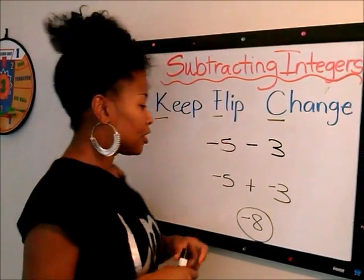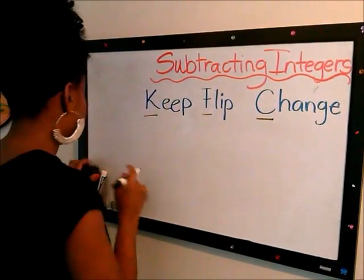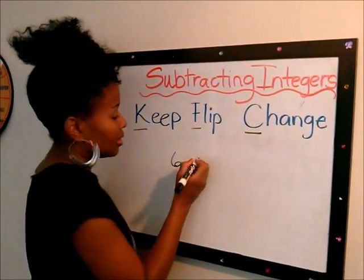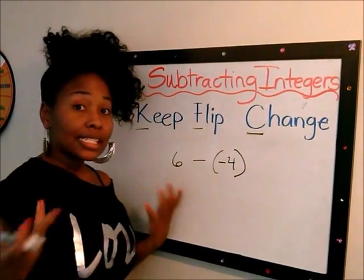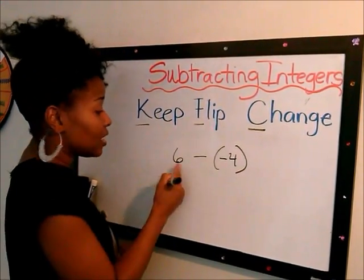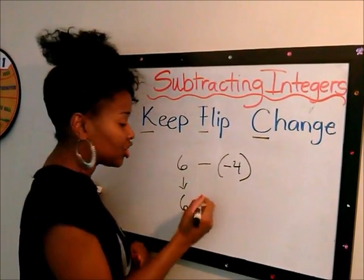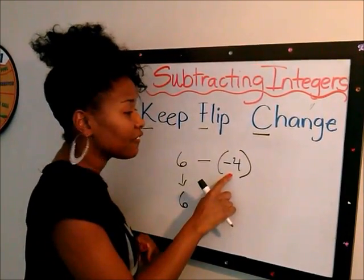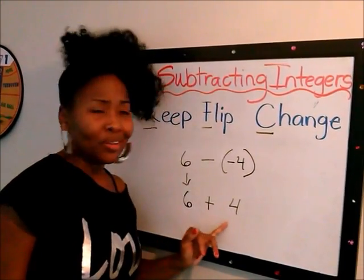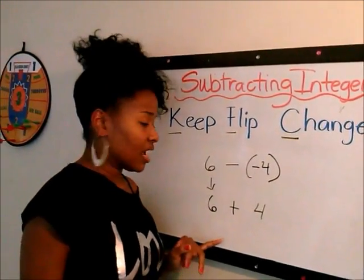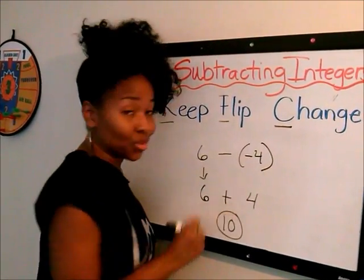Let's try a different example. How about six minus negative four? Same rules apply. The K stands for Keep — so this six, I'm going to keep it the same. I'm going to flip the subtraction into addition. And this negative four, I'm going to change it into a positive four. Look at that — we learned this type of addition when we were in like first grade, right? Six plus four, they're both positive numbers. We add them. The answer is 10.